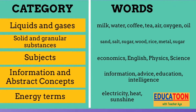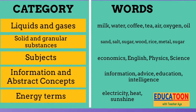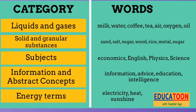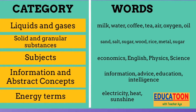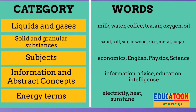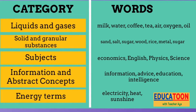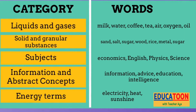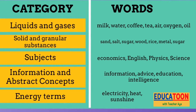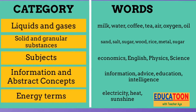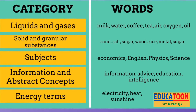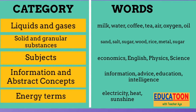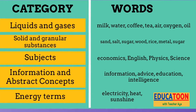For solid and granular substances, we have sand, salt, sugar, wood, rice, and metal. Mass nouns for subjects are economics, English, physics, or science. For information and abstract concepts, some examples are information, advice, education, and intelligence. For energy terms, the words are electricity, heat, and sunshine.